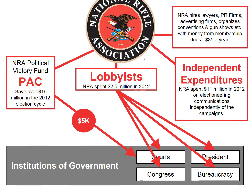The next section talks about some activities of interest groups and money. The National Rifle Association — here's how they spent their money in the 2012 campaign cycle. In 2012, it was $35 a year to be a member of the NRA, and some of that money is going to be used to hire lawyers, PR firms, and advertising firms, to organize conventions and gun shows, but a lot of it is going to be spent by the NRA Political Victory Fund — which is the NRA's PAC — on lobbyists and on independent expenditures.